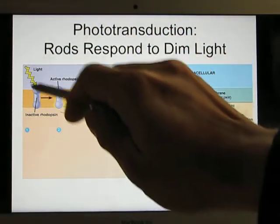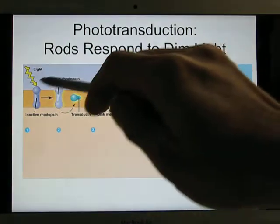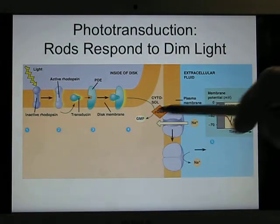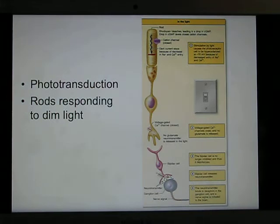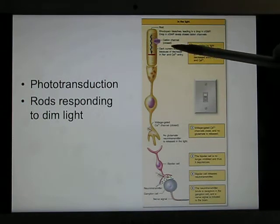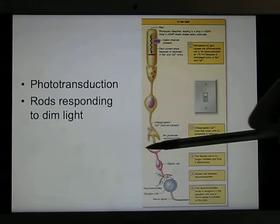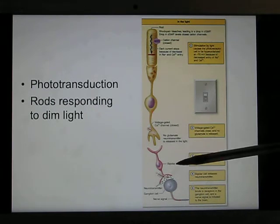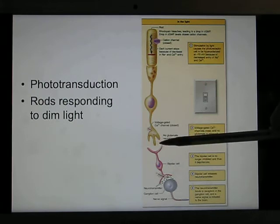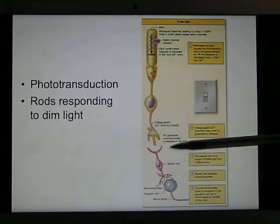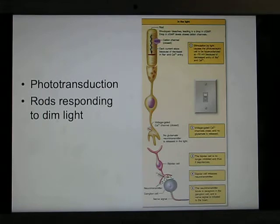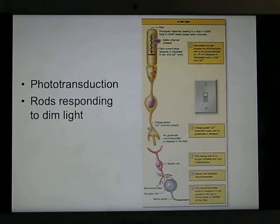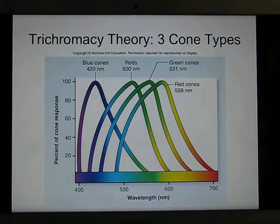When light hits the photopigments, it shuts down the ion channel, and the cell becomes hyperpolarized. When hyperpolarized, no voltage-gated calcium channels open, so no neurotransmitter is released. The bipolar cell reverses this: receiving no neurotransmitter, it releases a lot of neurotransmitter to the ganglia cells, which generate many action potentials to the brain. So when there is plenty of light, the brain receives a lot of action potentials.